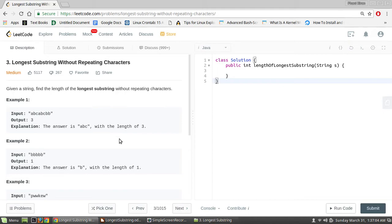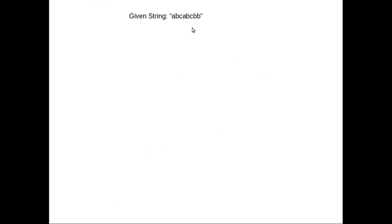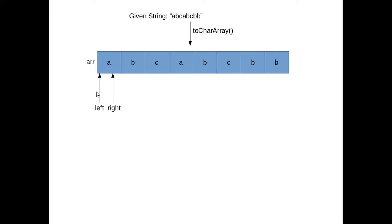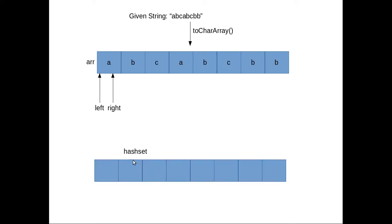Let's see how the two-pointer technique works. This is the given string — let's convert it into a character array. We'll have two pointers, left and right, and a hash set to keep track of the characters we have visited. If the element pointed to by right is not in the hash set, we add that character to the hash set, update the right pointer by 1, and take the difference between right and left to get the length. The max length is the maximum of the previous max length and the current difference.